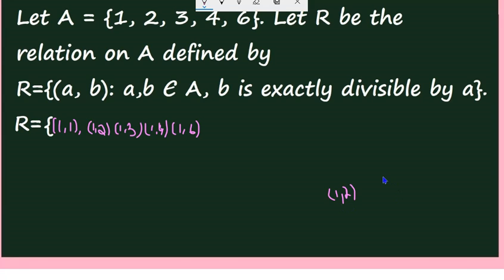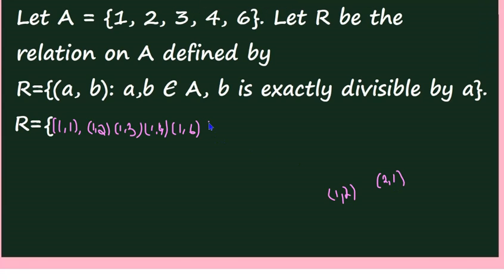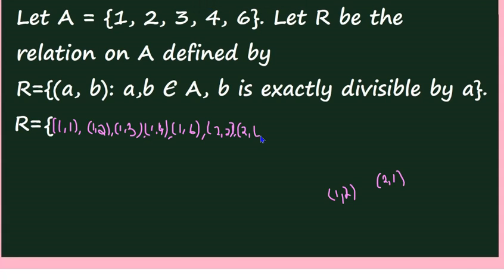Next, elements starting with 2: (2, 1) is not there because 1 is not divisible by 2. But (2, 2) is there since 2 is exactly divisible by 2. (2, 3) is not there because 3 is not divisible by 2. (2, 4) is there. (2, 6) is there since 6 is exactly divisible by 2.